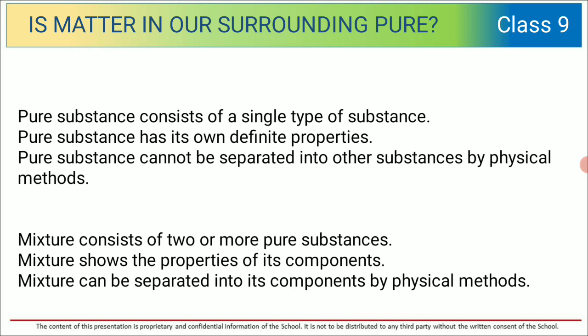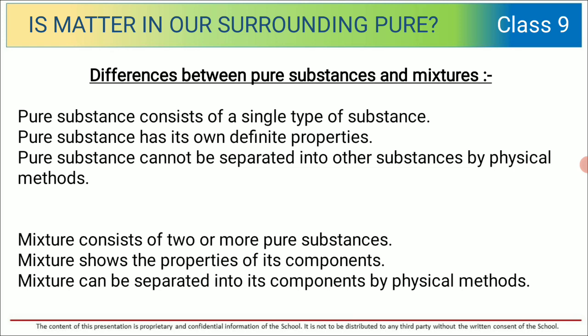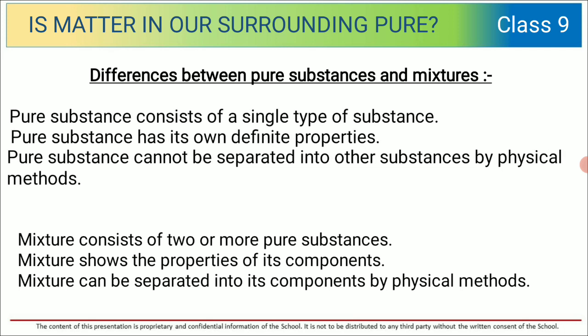Pure substance cannot be separated into other substances by physical methods. Whereas a mixture can be separated into its components by physical methods — there are different methods to separate the components of a mixture. But in case of pure substance, they cannot be separated. We just saw the difference between pure substances and mixtures.